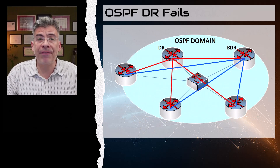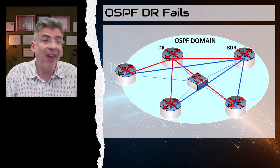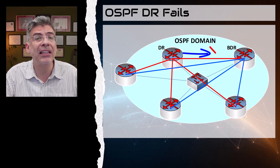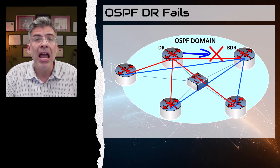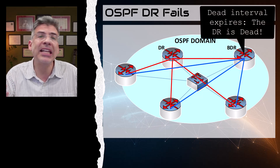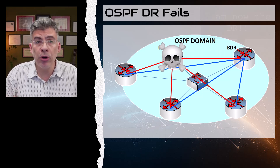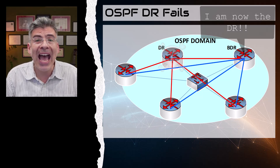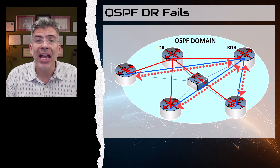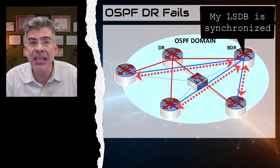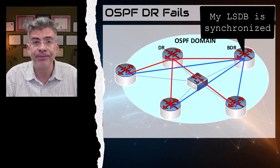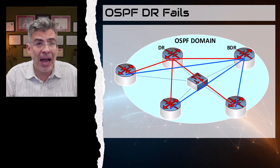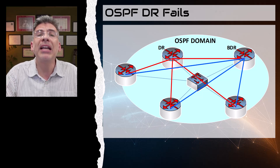What happens if a DR fails? If the BDR stops receiving hello messages from the DR after the dead timer expires, it considers the DR dead. So the BDR promotes itself to become a DR. The BDR already has adjacencies with all DR others and has an updated LSDB, so it enters the DR role immediately. If the BDR no longer receives hello packets from the DR and the dead interval expires, the BDR becomes the DR.